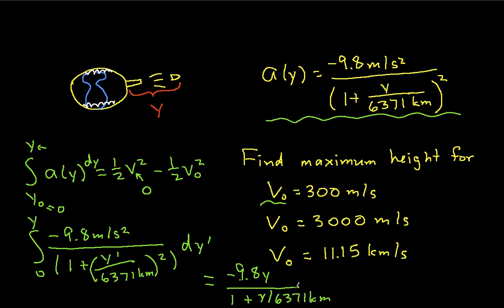Okay, so I've taken this function, which is acceleration as a function of position, integrated it to give me this. And this guy here is equal to one-half v squared, which is 0, minus one-half v0 squared.